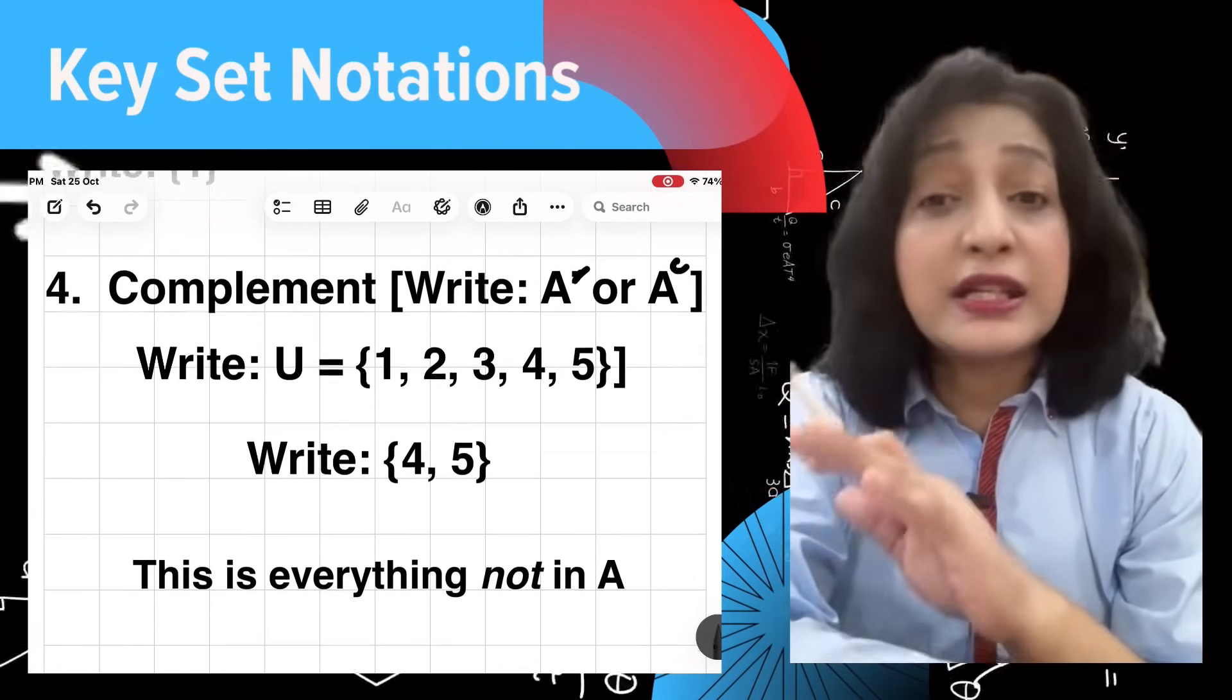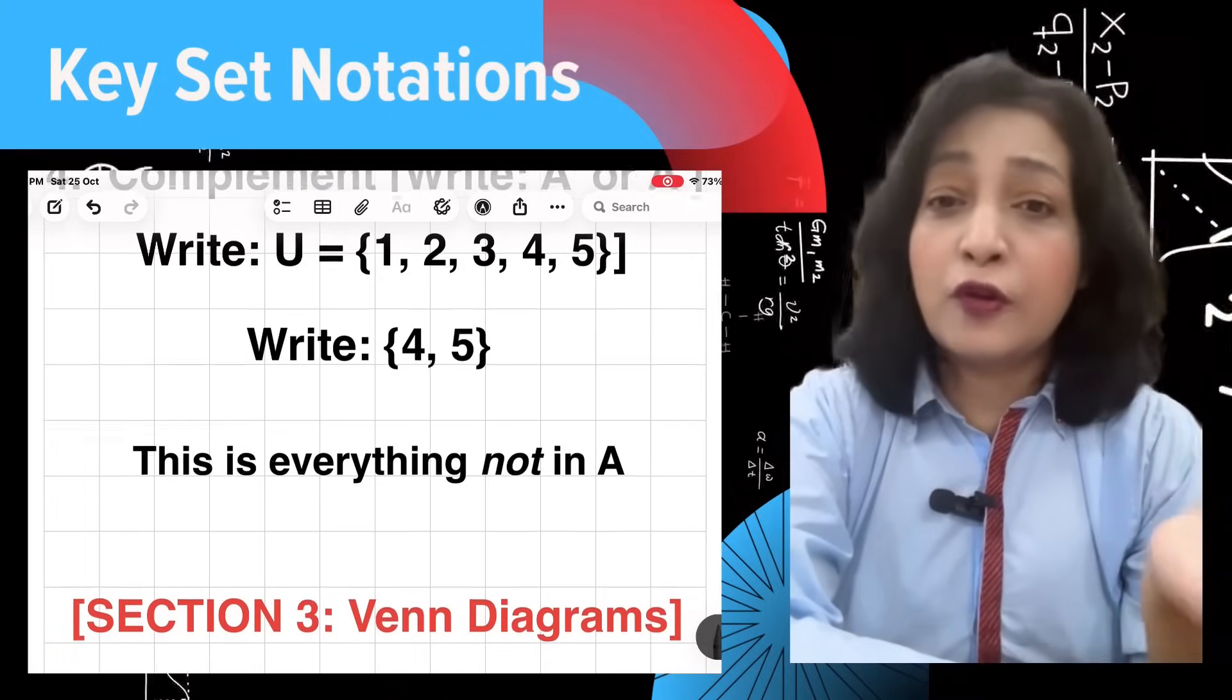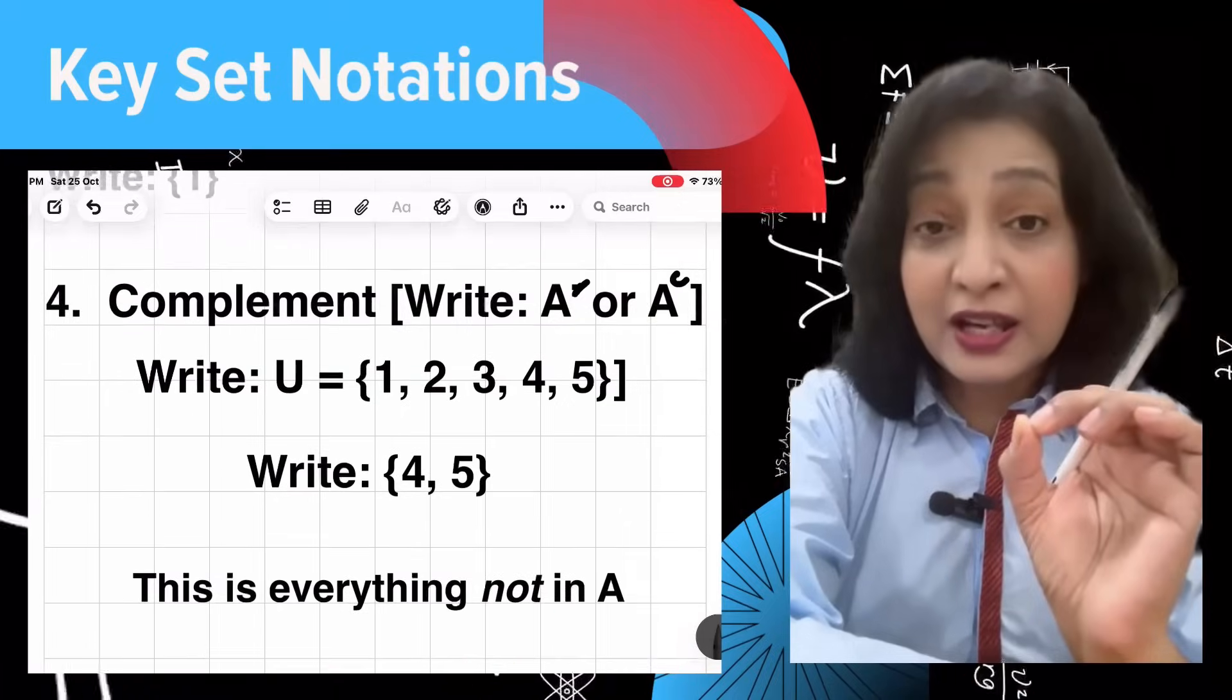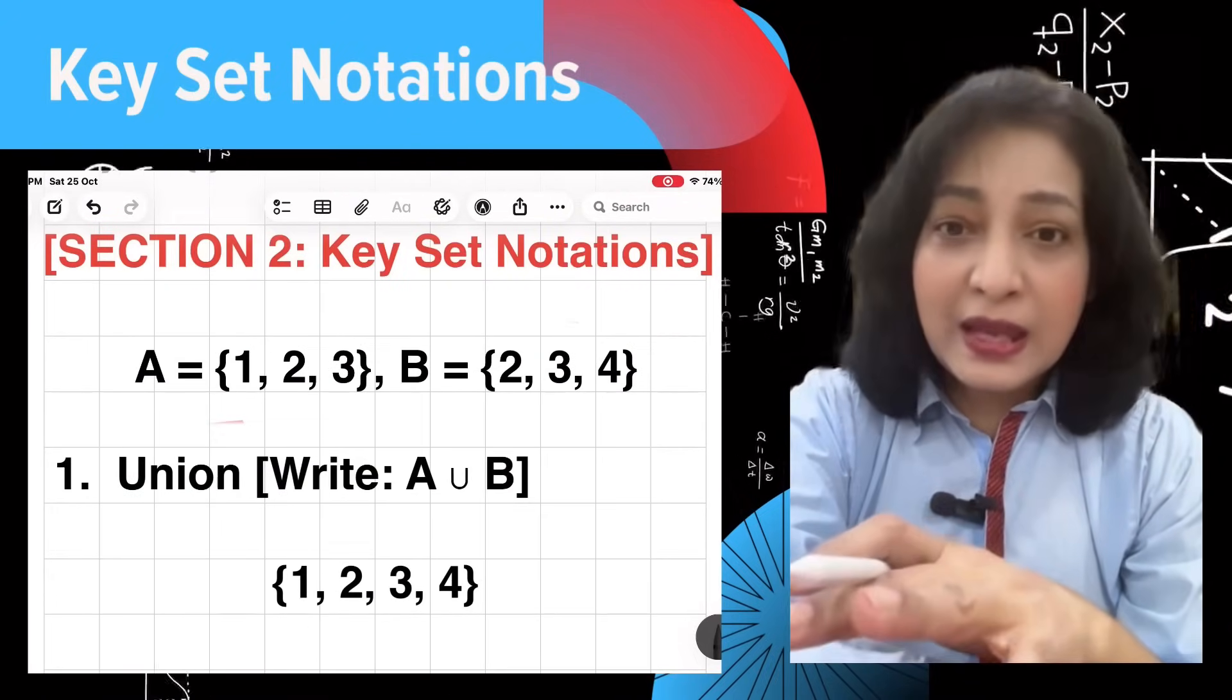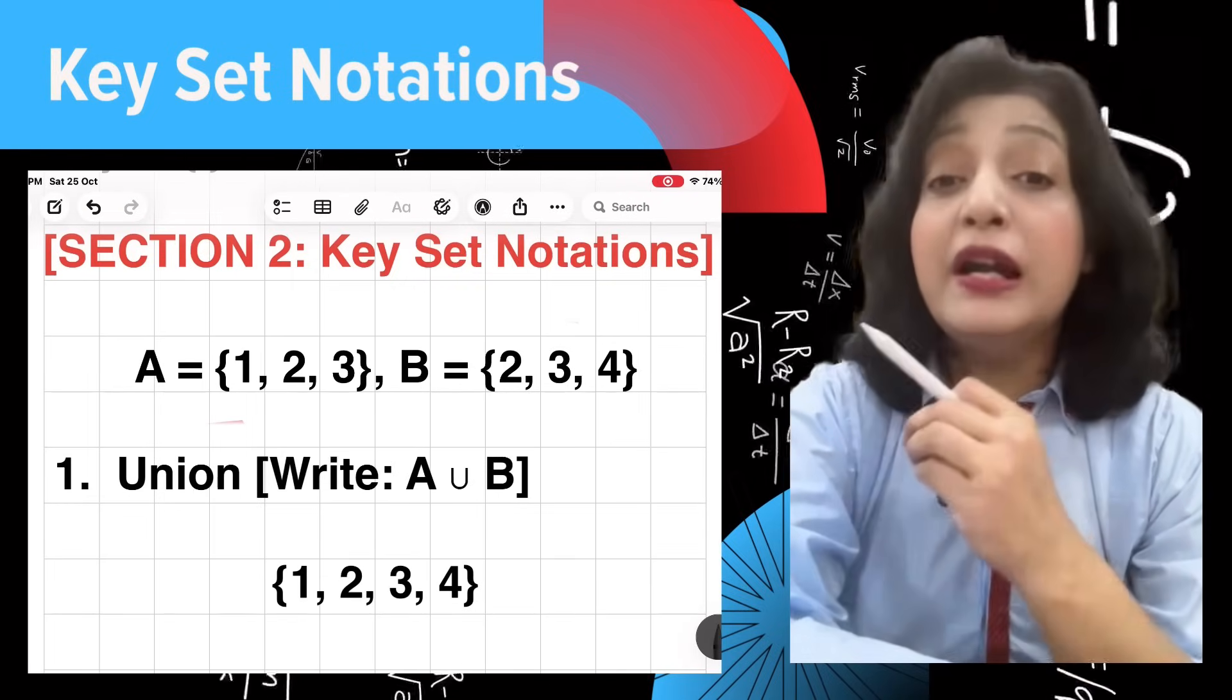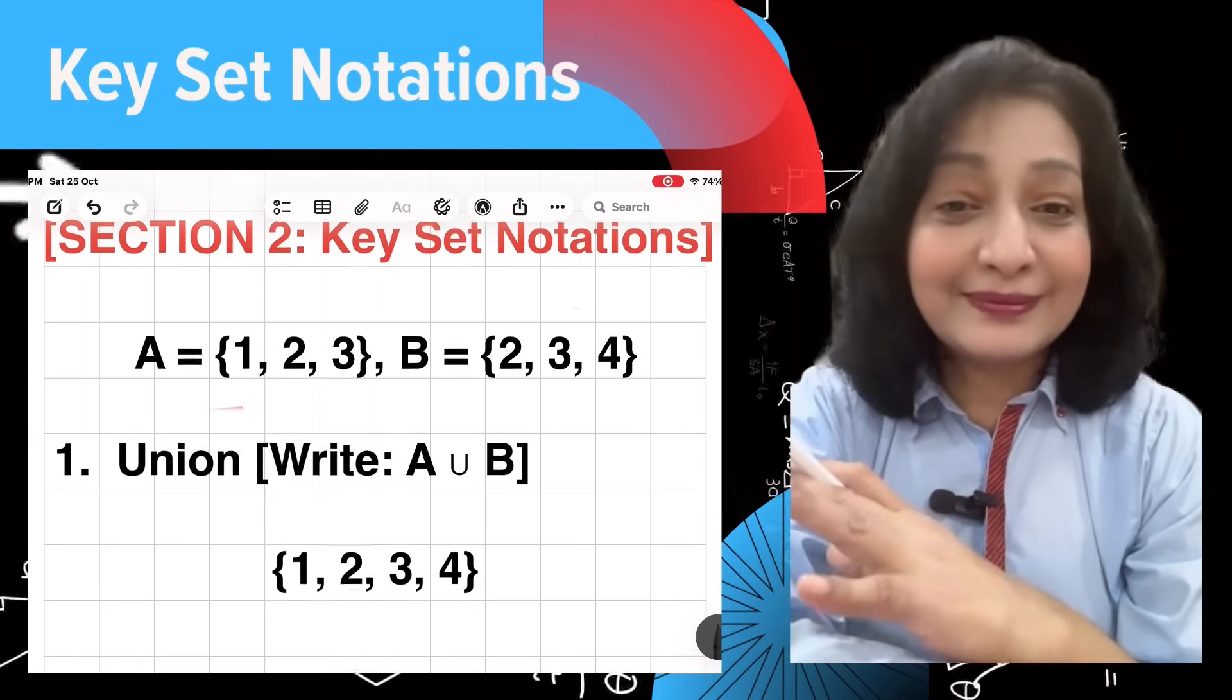This is everything not in A, but we need a universal set first. The universal set U = {1, 2, 3, 4, 5} has all possible elements we are considering. So A's complement is {4, 5}, because those are in U but not in A. These operations are like the building blocks of sets. Let's see how we can visualize them.